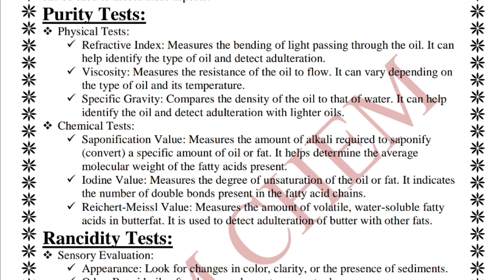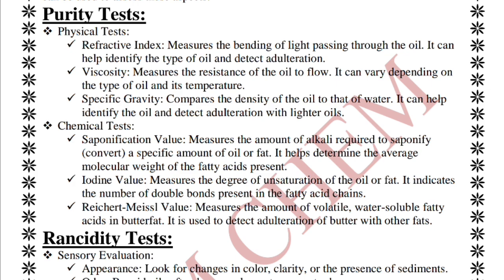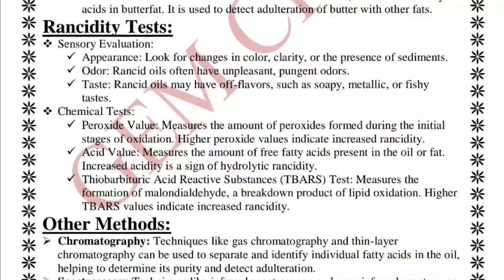Chemical purity tests include: saponification value, which determines the average molecular weight of fatty acids; iodine value, which measures the degree of unsaturation in an oil or fat; and Reichert-Meissl value, which measures the amount of water-soluble fatty acids in butter fat to detect adulteration.